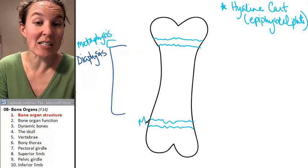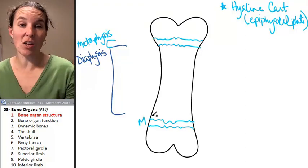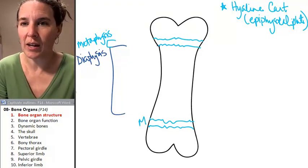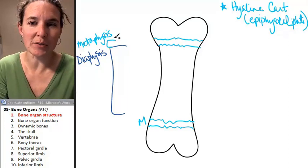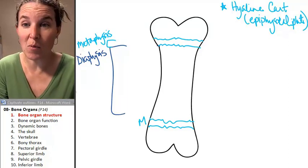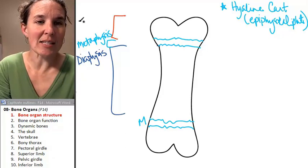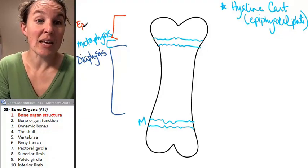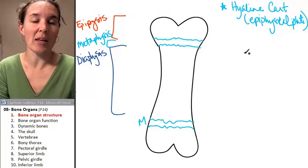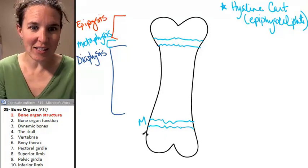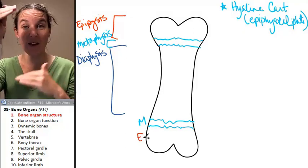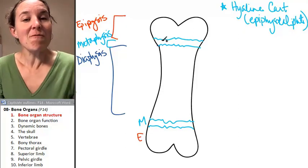So there's a metaphysis on each end of the long bone, and wouldn't you know it that at the top of the long bone, we're going to have one more name, and this one is the epiphysis. And there's an epiphysis at both ends.